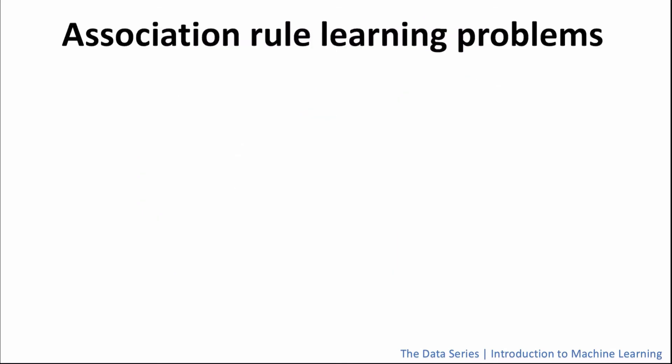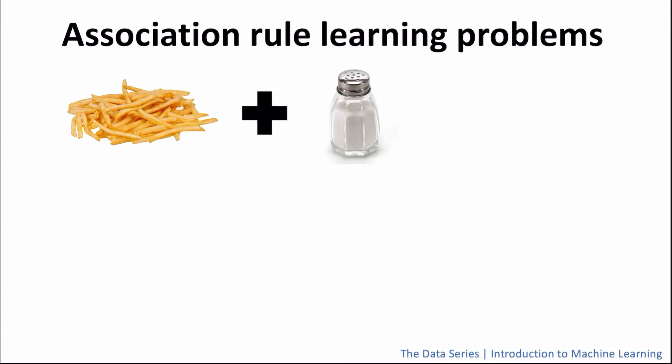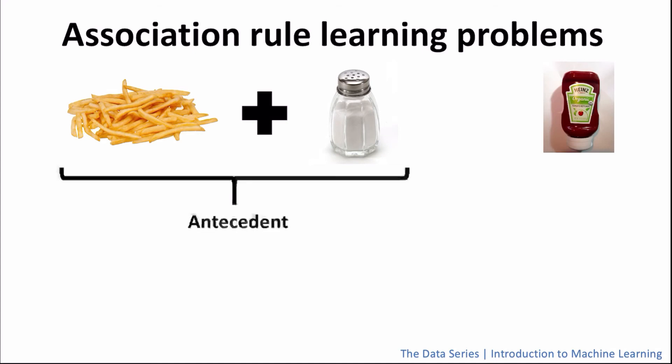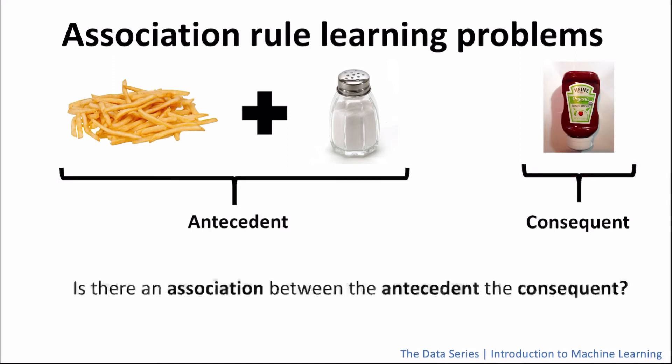Let's now take a look at association rule learning algorithms. These algorithms are often used in marketing. The algorithm predicts that, for example, if a person was to buy potato chips or fries or whatever you call them and salt, what are the chances that that person will also buy ketchup? Just to add some technical terminology here, the potato chips and the salt are called the antecedent and the ketchup is called the consequent. Now, the job of an association rule learning algorithm is to find if there is an association between the antecedent and the consequent.